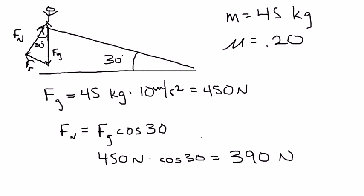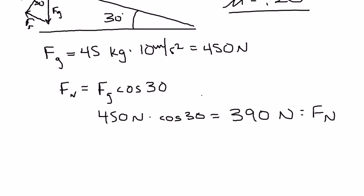Okay, so now we know that the normal force is 390 newtons. That equals the normal force. And we know that the coefficient of sliding friction is 0.20. So now we can solve for the force of friction. To do that, all we have to do at this point is force of friction equals 0.20 times 390 newtons.